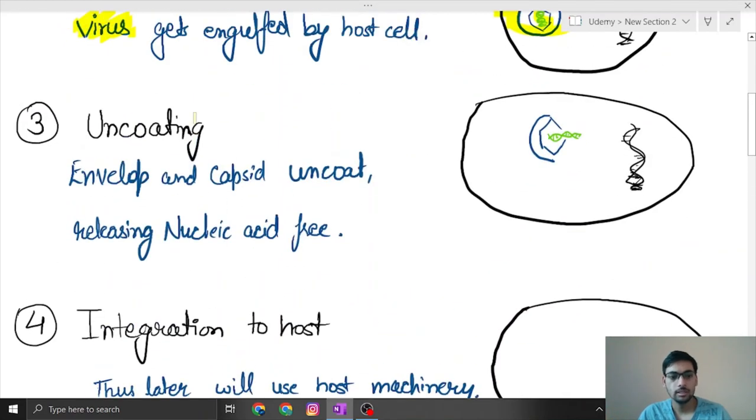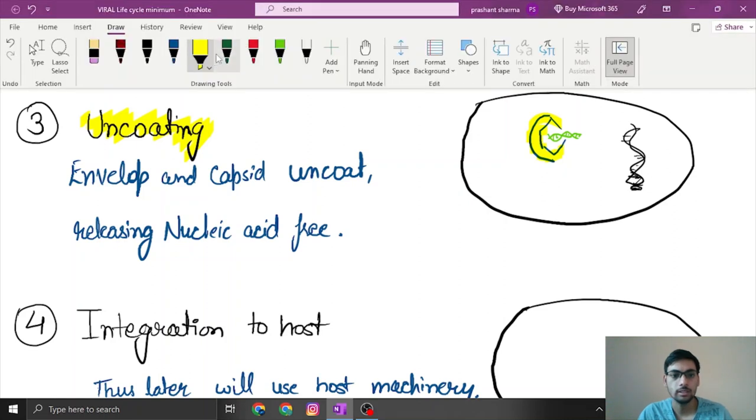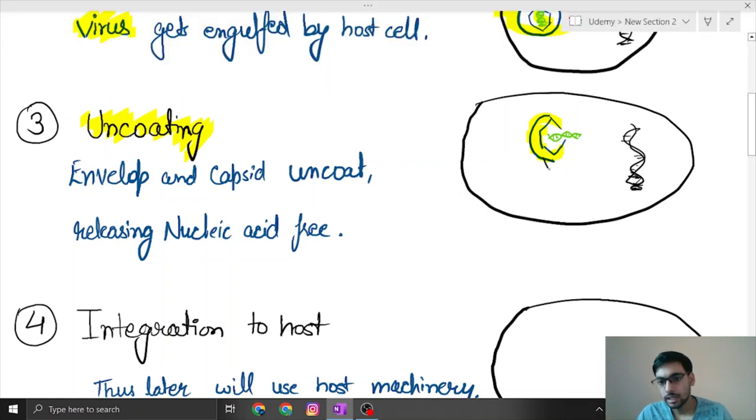Then comes the stage of uncoating. When it enters the host cell it uncoats its outer capsid or envelope if it has envelope and capsid. These envelopes and capsid help the antibodies to attach to them. Antibodies will come and attack the envelope and the capsid.